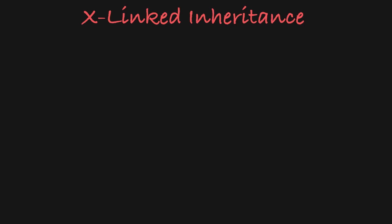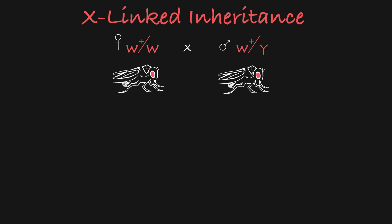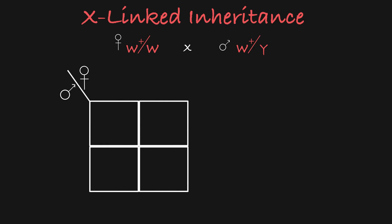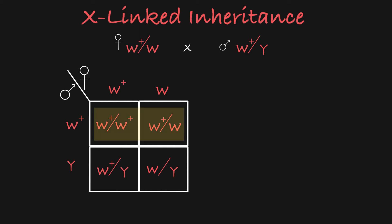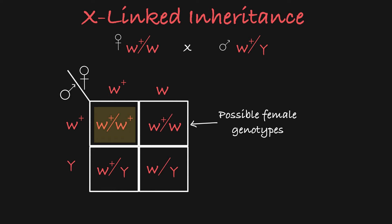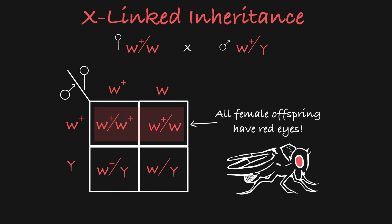Now let's look at what happens when parents pass on their X-linked genes. Let's say we have a female that is heterozygous — one of her X chromosomes has the W-plus allele and one has the recessive W-allele, so she has red eyes. We'll cross this red-eyed female to a male fly who also has red eyes, so his X chromosome carries the W-plus allele. We can set up a Punnett square for this cross just as we would for any other cross. Of all the female offspring, half will be heterozygous and half will be homozygous for the dominant W-plus allele, so all of the female offspring from this cross will be red-eyed.